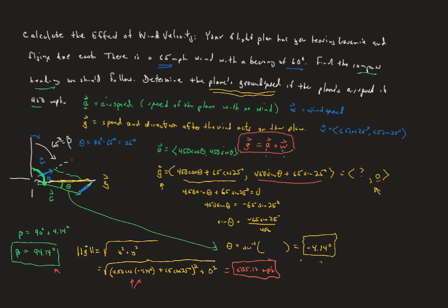Our plane's engine pushes us at 450 mph, and we're aiming it at −4.14 degrees — slightly south of east — anticipating the wind will blow us onto the due east course we want. Because the wind is a little bit at our back, it adds speed, increasing us from 450 to just over 505 miles per hour. See what you can do now with homework 52 — these are pretty challenging problems.